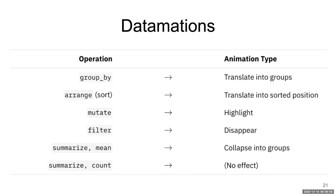The tool that we created to animate data analysis pipelines is called datamations. In our first implementation of this project, we decided to concentrate on a few core operations found in many data analysis pipelines: grouping observations according to variables, sorting data according to certain variables, creating new variables from existing variables, filtering out data, and calculating summaries specified by grouping variables.